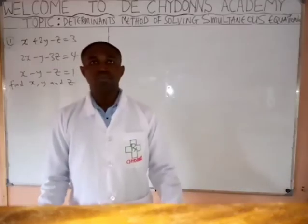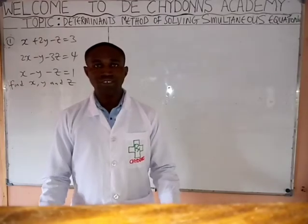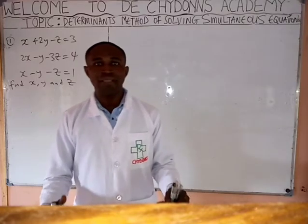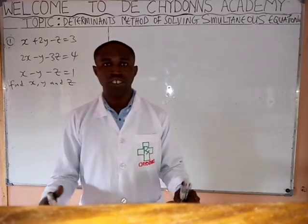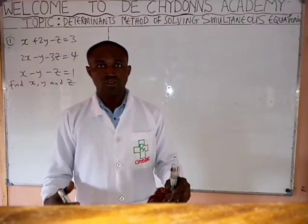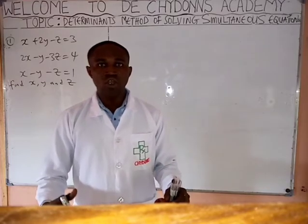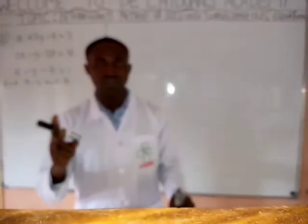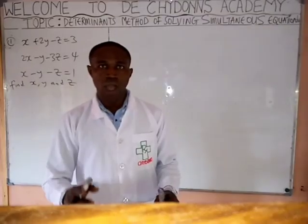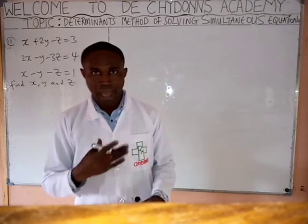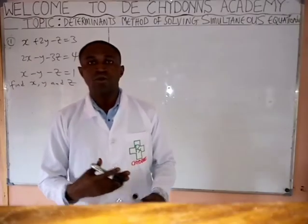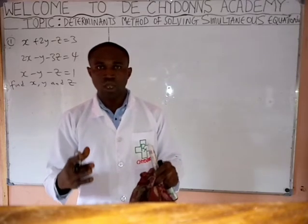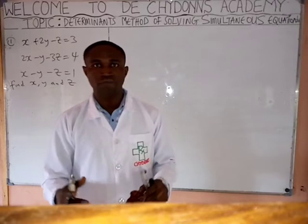Welcome again to the Chidos Academy. This is the continuation of the topic, Determinant Method of Solving Simultaneous Equations. Today, we will be discussing how to use the Determinant Method to solve simultaneous equations in 3 variables, looking for x, y, and z. I am Nwatu Daniel. Please don't forget to subscribe and turn on your notification button to see more of our videos.